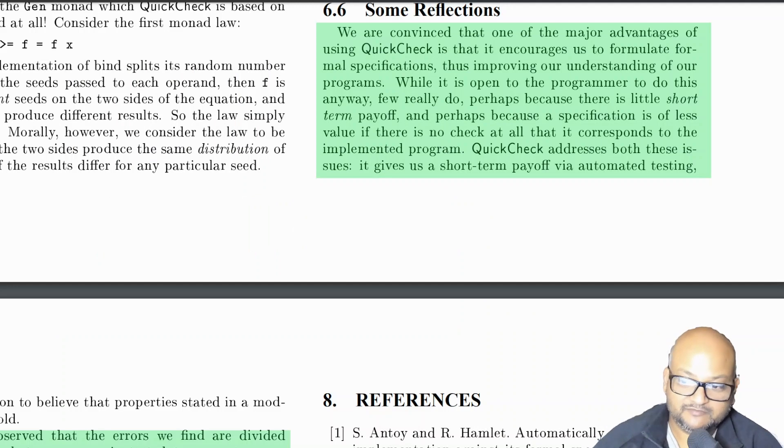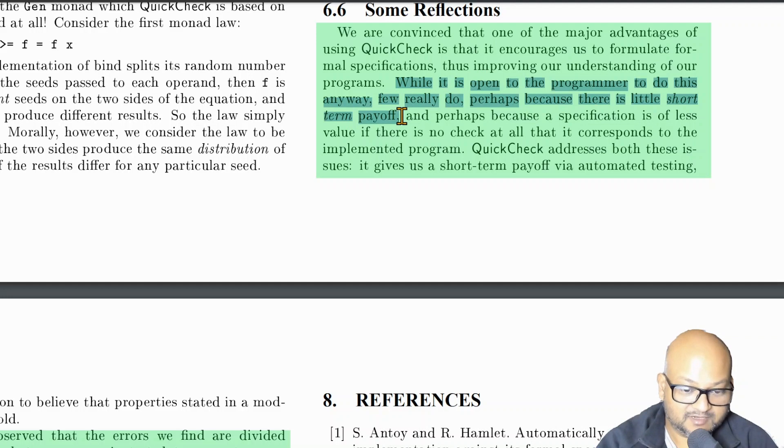The authors note that one of the key benefits of property-based testing is that it puts the programmer into the frame of mind of formulating the properties that they want their code to satisfy, irrespective of the implementation. In other words, these properties are a formal specification for their code. And the reason why programmers often do not want to do formal specifications is that they don't really see a short-term benefit. With a framework like QuickCheck, there is a short-term benefit because tests are immediately executable and provide real-time feedback.